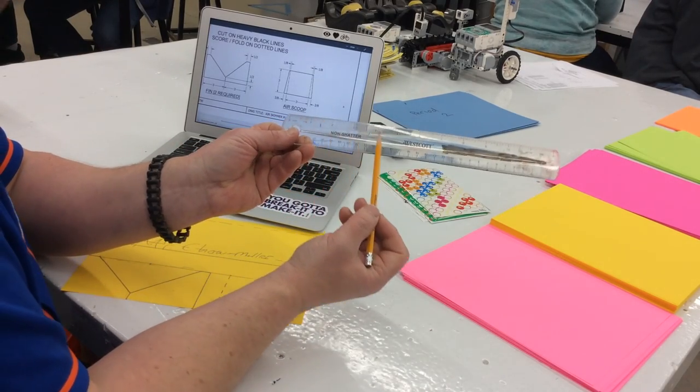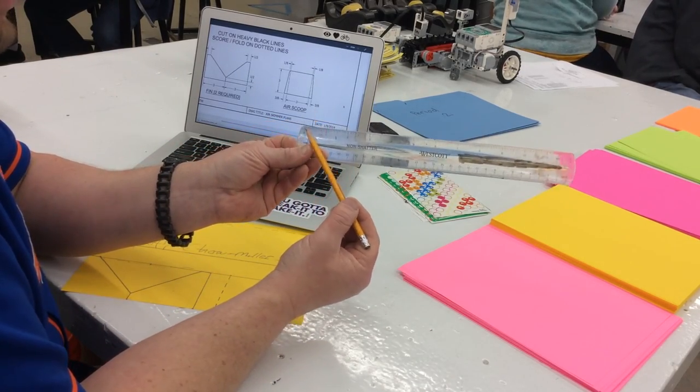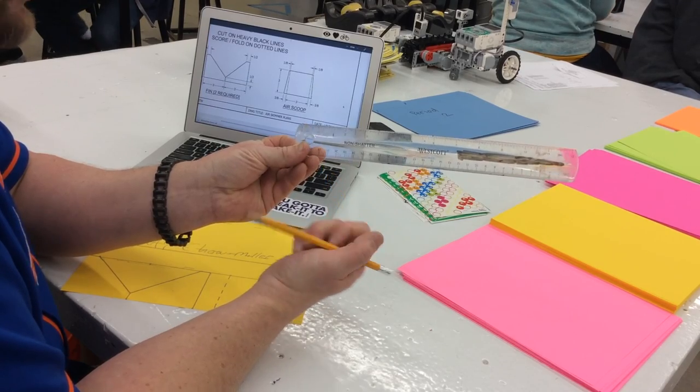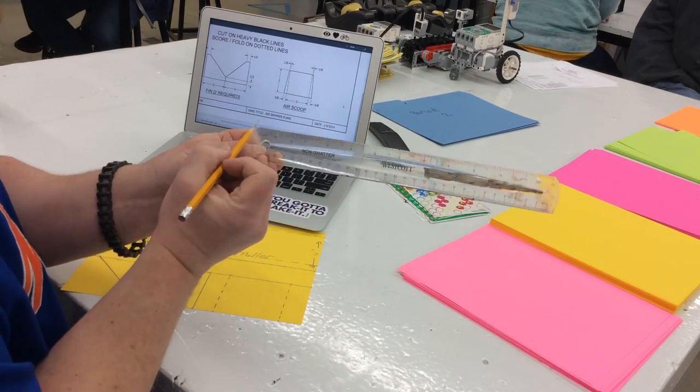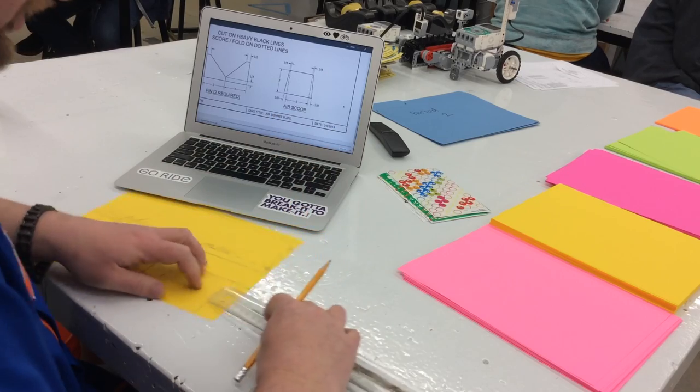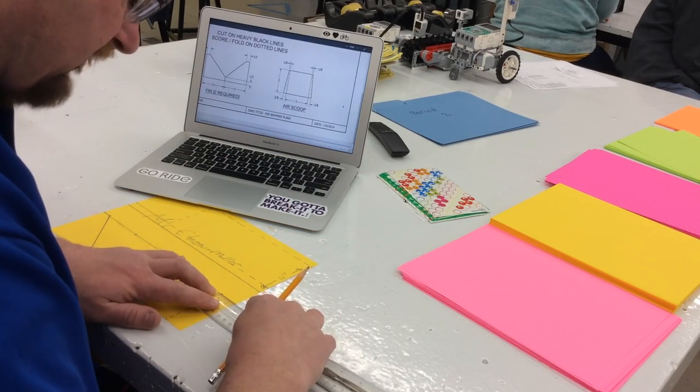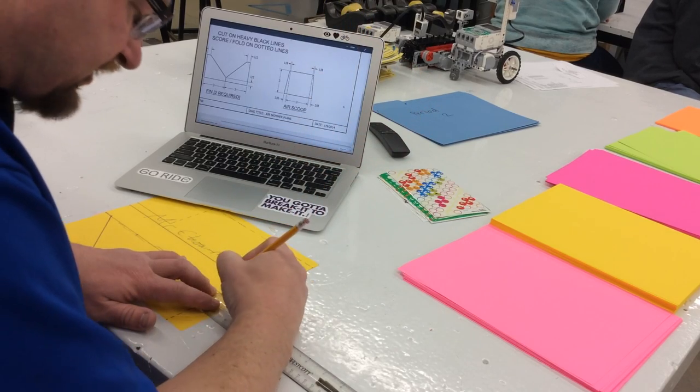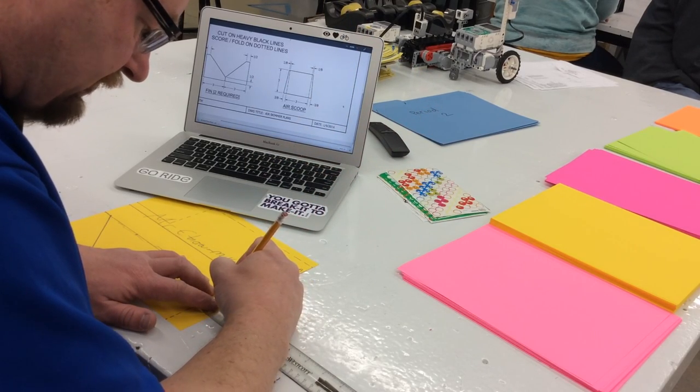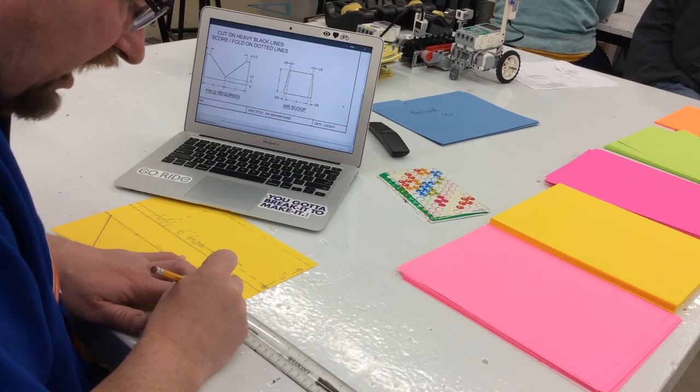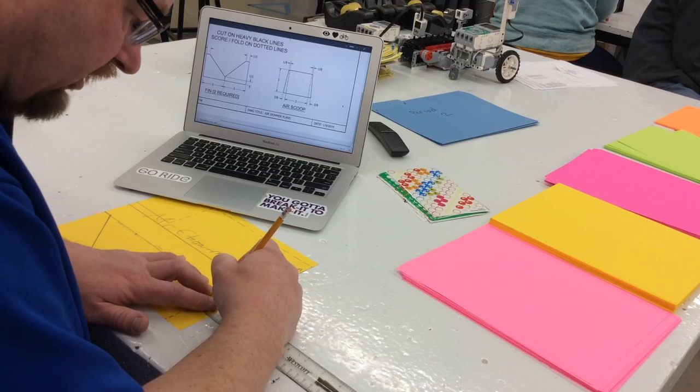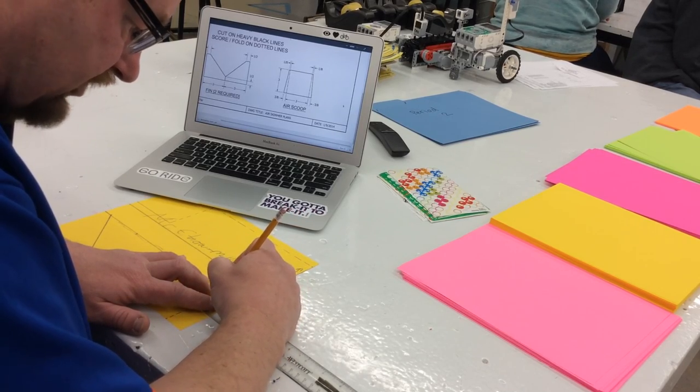This is a 16th inch ruler. So 1 eighth is going to equal 2 sixteenths. So I need you guys to go 2 of these little lines out. So from the top here, and this is where it helps to have a sharpened pencil, I'm just going to make a mark. That's 2 lines over from the 0 and connect that by making a darker line.